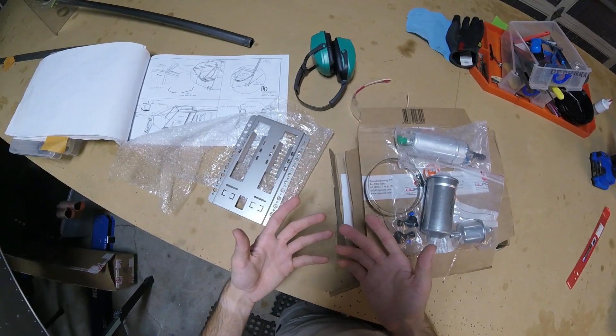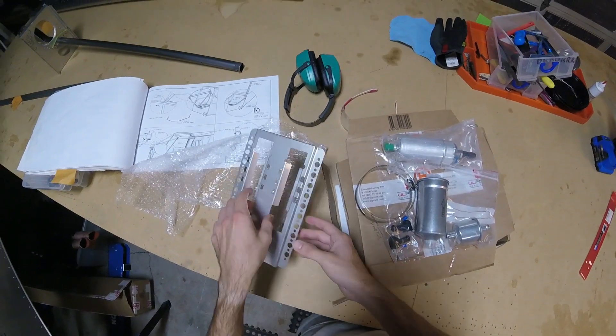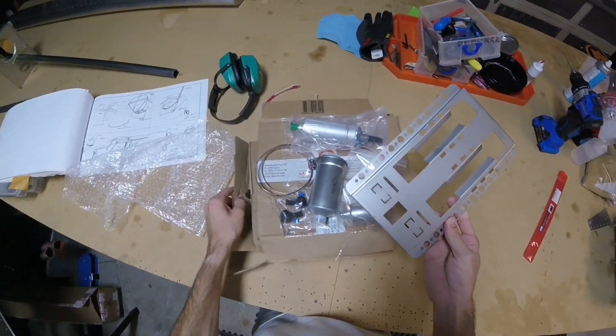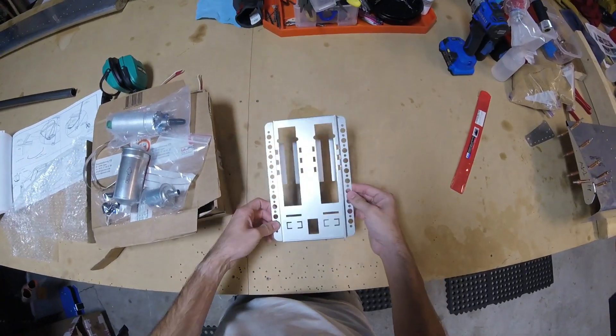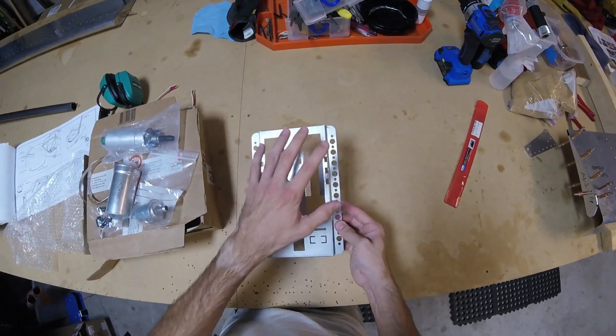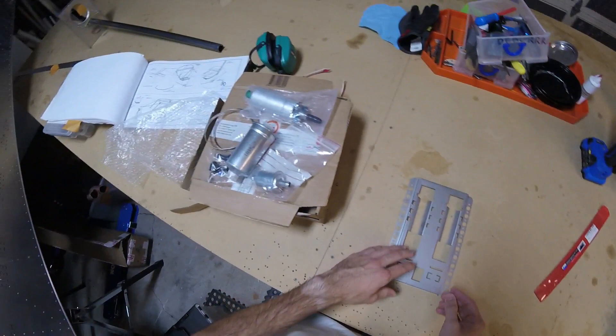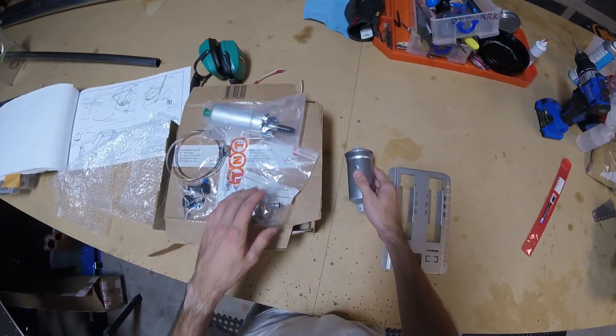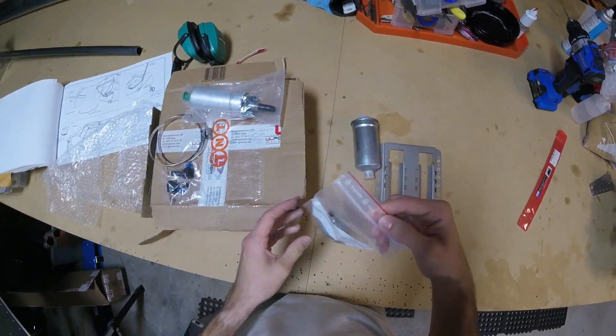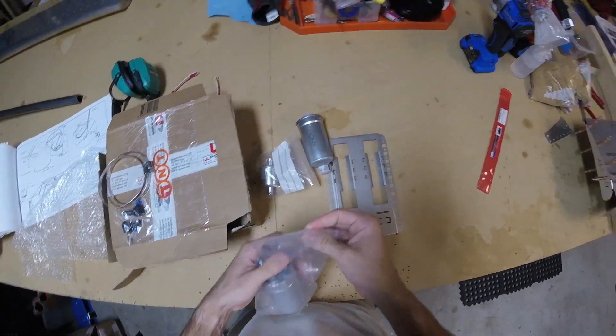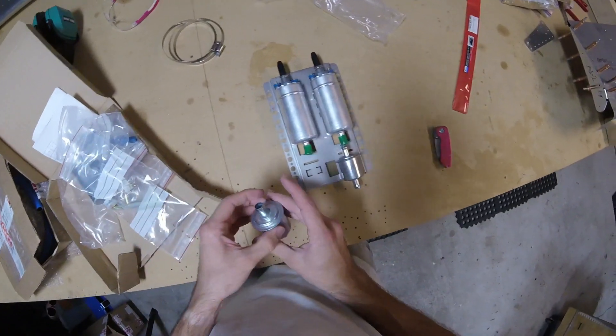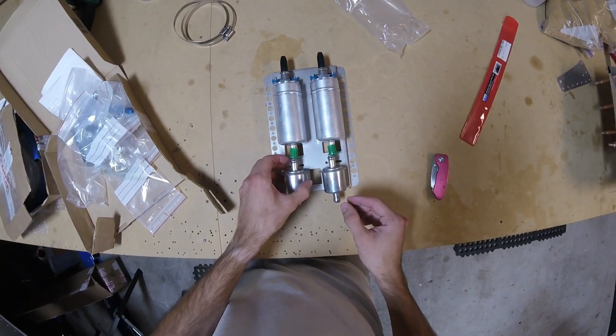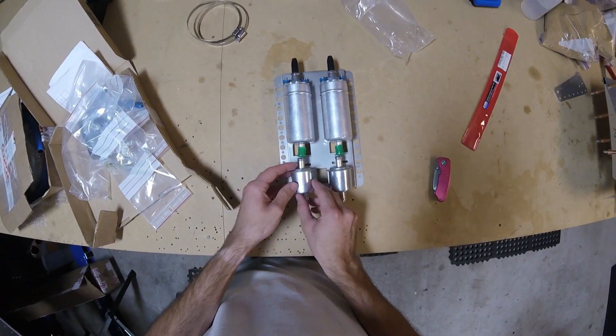Okay, I'm going to get started on some of the fuel system stuff and just kind of getting things out and starting to put things where they're supposed to be. This is our double fuel pump bracket. We've got our fine filter, coarse filter, and a fuel pump right here.